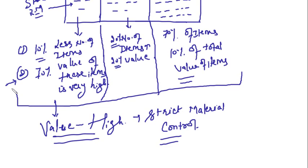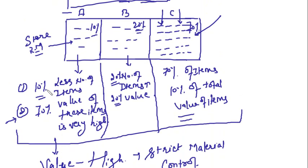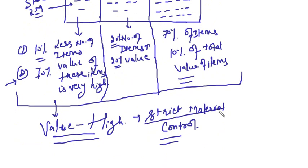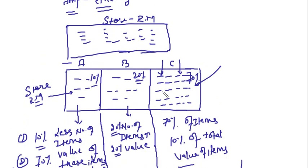So this is the basic concept of ABC analysis: divide your store into three parts — A, B, and C. A items constitute approximately 10% of the total items in your store but 70% of the value — these are very high-value items requiring strict control. Category B items are comparatively less important, constituting 20% of total items and 20% of total value. Category C is the least important, constituting 70% of total items but not very high in value.